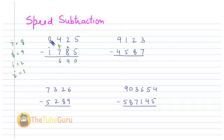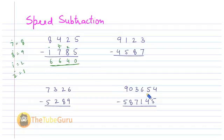Here we have eight minus one-dot, which is eight minus two, giving six. So the answer for this example is 6, 6, 4, 0.